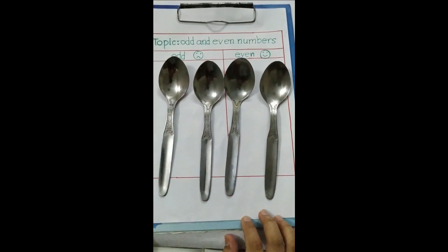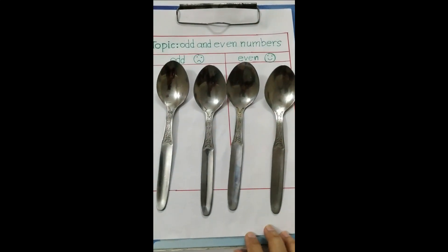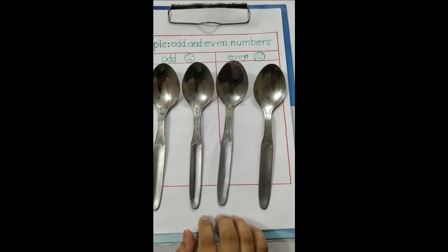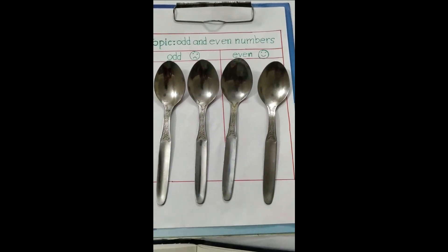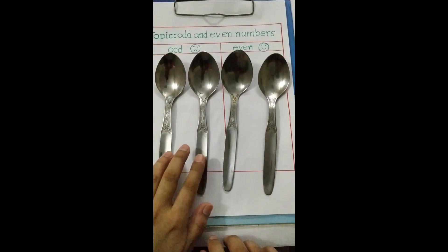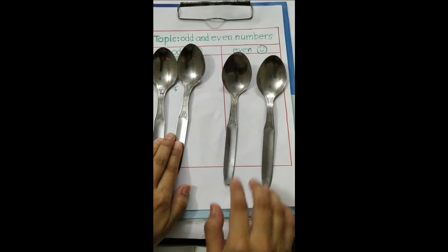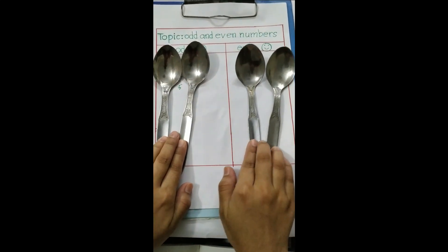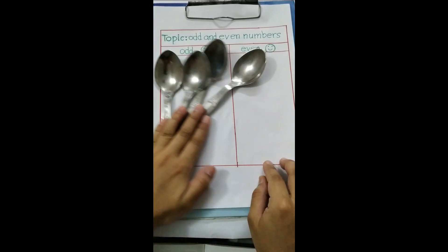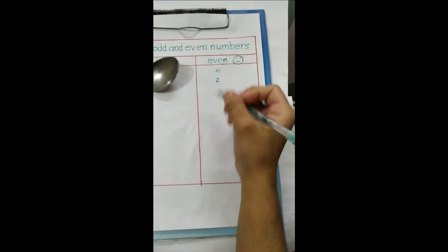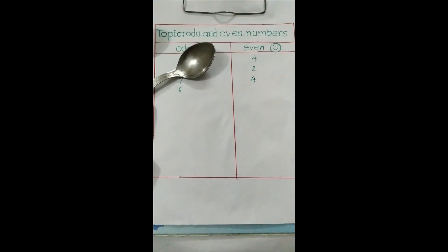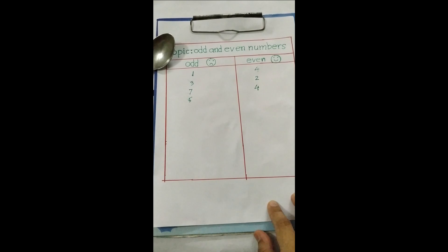Now how many spoons are here? Let me count: one, two, three, four. Now as I said, these two spoons form a pair, these two spoons form a pair. That means four spoons is even, so we can write here four. Now another activity I will show you.